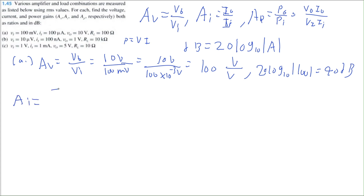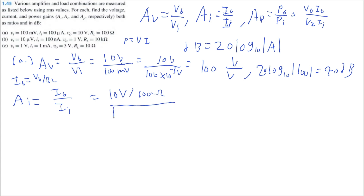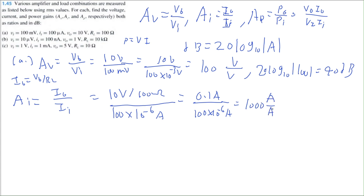Now our current gain is equal to output current divided by input current. We have our input current, but to find output current we take output voltage divided by load resistance: 10 volts divided by 100 ohms. Input current is 100 microamps, which is 100 times 10 to the negative 6 amps. That gives 0.1 amps divided by 100 times 10 to the negative 6 amps, equal to 1,000 amp per amp, which converts to 60 dB.